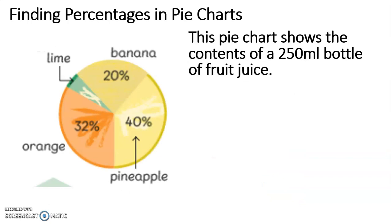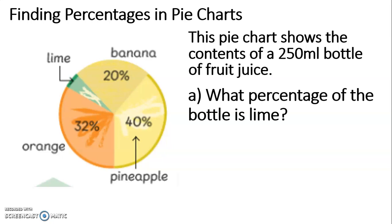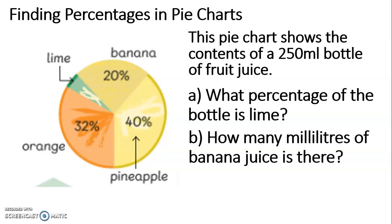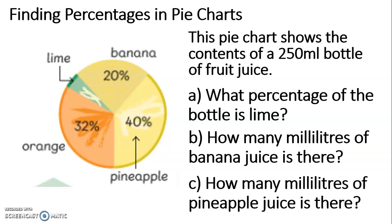This is our second pie chart. This time, this pie chart shows a 250 millilitre bottle and the contents of it in percentages. Question one: what percentage of the bottle is lime? Question two: how many millilitres of banana juice is there? And question three: how many millilitres of pineapple juice is there? If you'd like to solve this yourself, you should pause the video now.